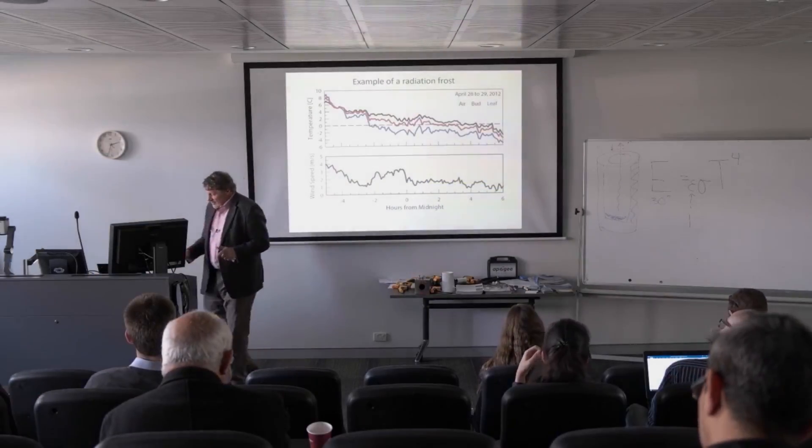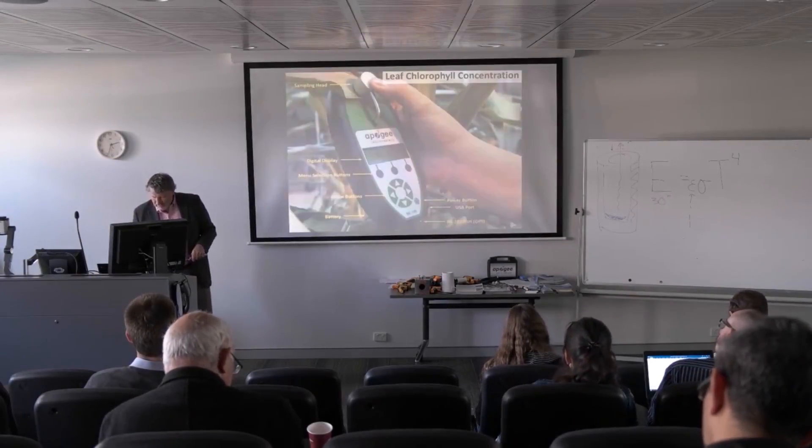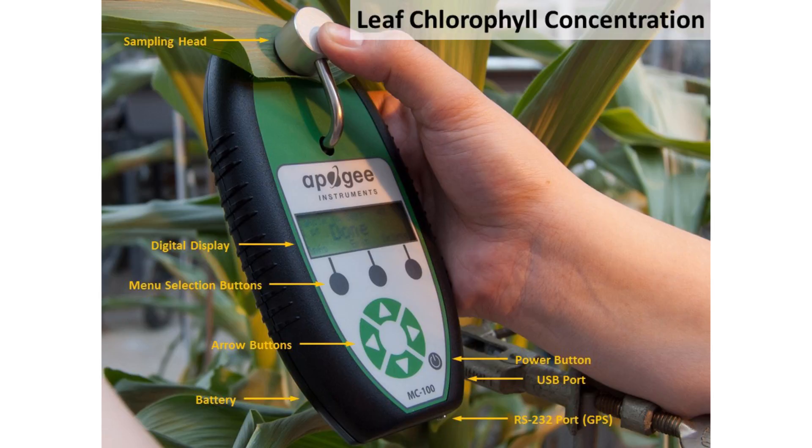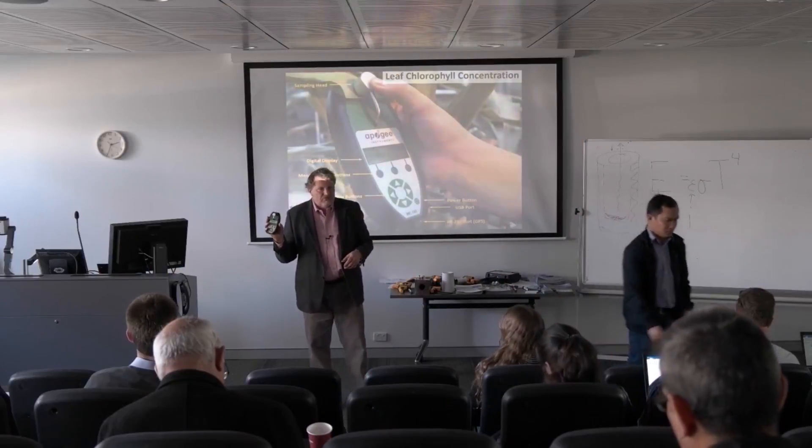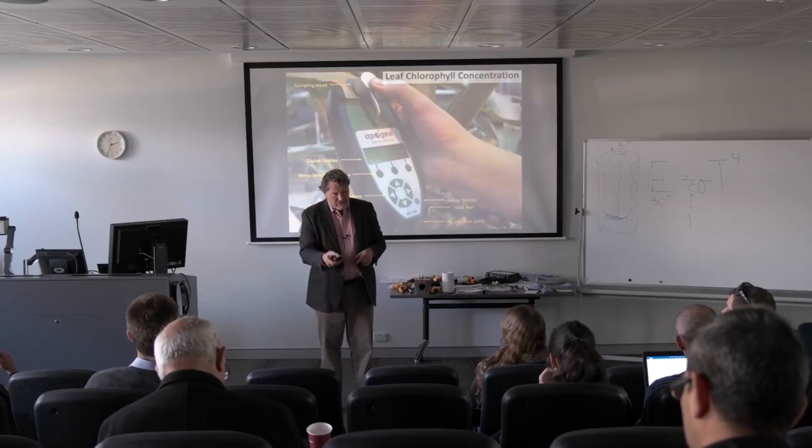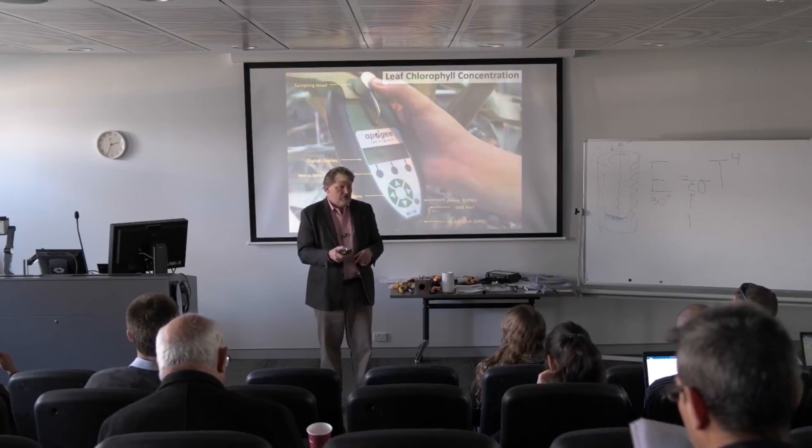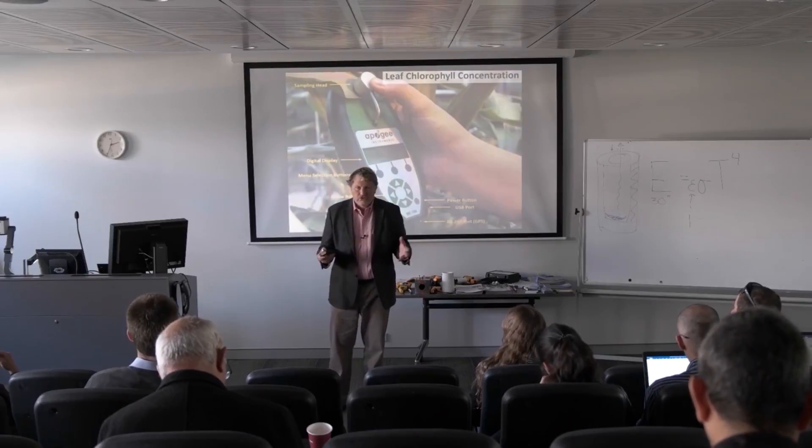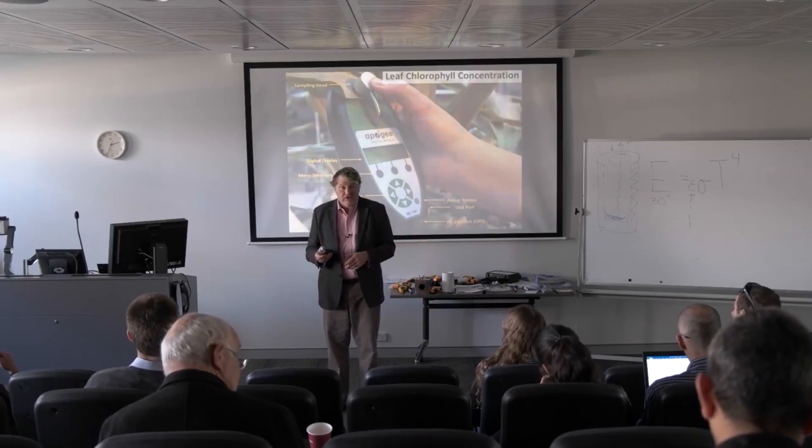The next topic, I'm going to do two at once or they're real short, leaf chlorophyll. We have a chlorophyll meter here. This is the instrument, self-contained digital readout. You clamp on a leaf and this tells you the amount of chlorophyll in the leaf, which is particularly useful for assessing plant health.